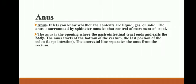The muscle surrounding the anus is a skeletal muscle and is under the control of our will. The anus lets us know whether the contents are liquid, gas, or solid. The anus is surrounded by sphincter muscles that control the movement of stool. The anus is the opening where the gastrointestinal tract ends and exits the body. The anus starts at the bottom of the rectum, the last portion of the colon, that is, the large intestine. The anorectal line separates the anus from your rectum.